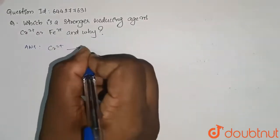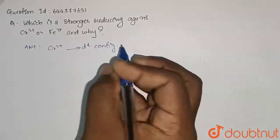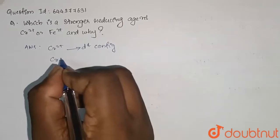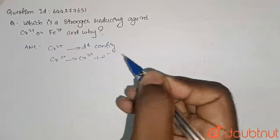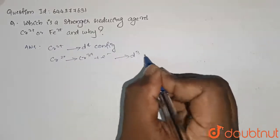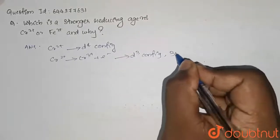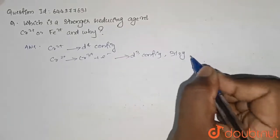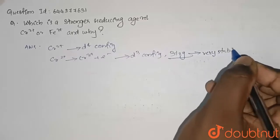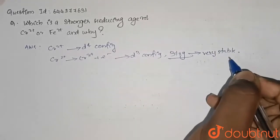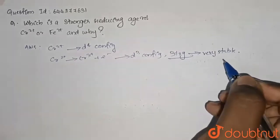For Cr2+, it has a d4 configuration. So it acts as a reducing agent and gets oxidized to Cr3+ plus one electron. This has a d3 configuration which is also called as 3T2g configuration. This is very very stable. This is the main reason of the higher or stronger reducing agent character of Cr2+.